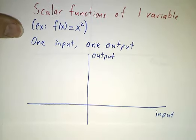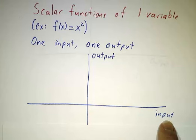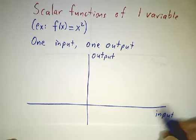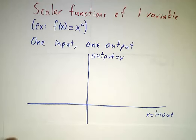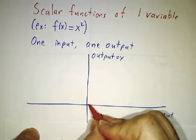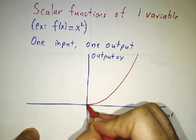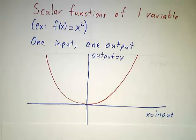And we knew how to draw a picture of it. We put the input on one axis, we usually call that x. And we put the output on the other axis, we usually call that y. And if we had f equals x squared, we drew a picture of it. And that was some nice curve.